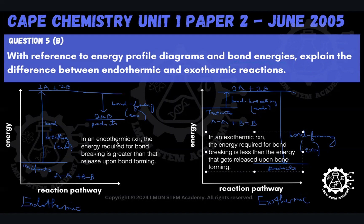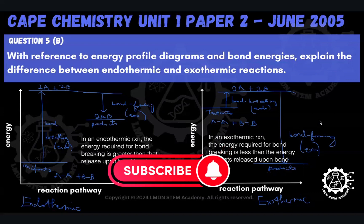Just keep this in mind: we already knew that for endothermic, the products are higher than the reactants, and for exothermic, the reactants are higher than the products. But in terms of bond energies, this is what the question really wanted us to capture — how those energy changes in bond breaking and forming feed into us being able to say, in the end, this is endothermic, and in the end, this is exothermic.